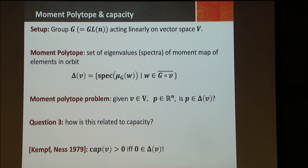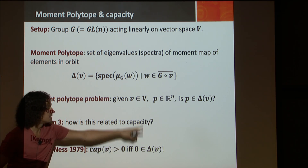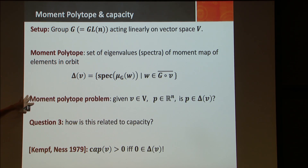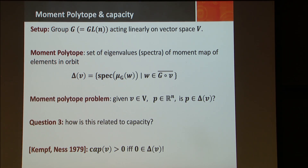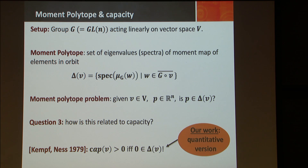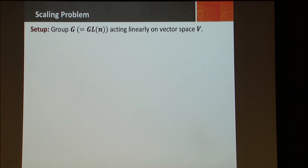Going back to the linear programming example, the Newton polytope is exactly the moment polytope. As Vista points out, the general linear programming question is: I give you the polytope and a point, and I want to know if the point is in the polytope or not. Our work gives a quantitative version of this non-commutative duality — we want a polynomial time algorithm.